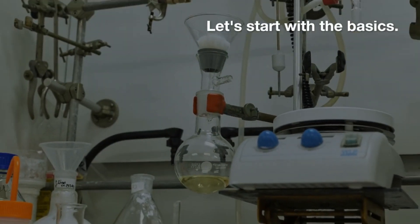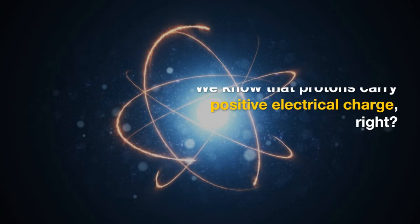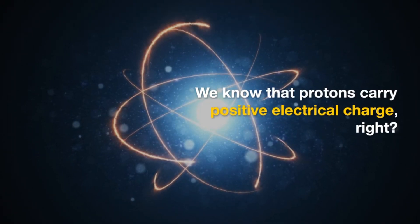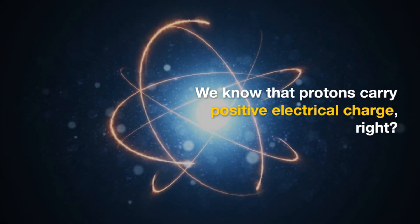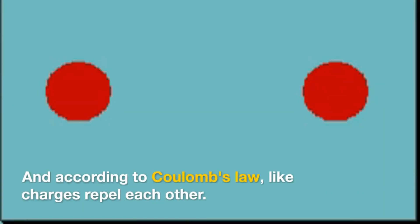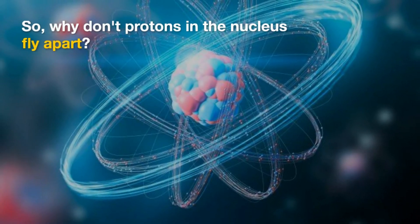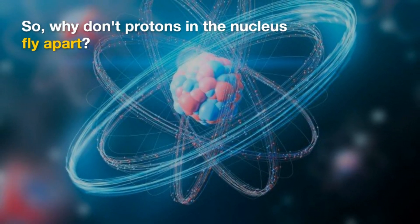Let's start with the basics. We know that protons carry positive electrical charge, right? And according to Coulomb's law, like charges repel each other. So why don't protons in the nucleus fly apart?